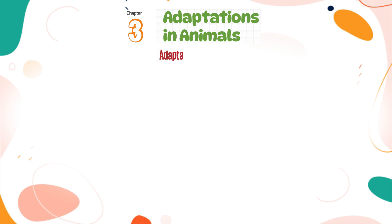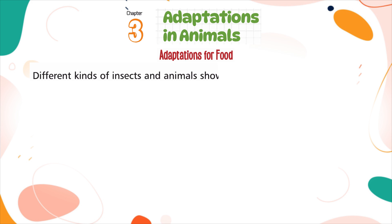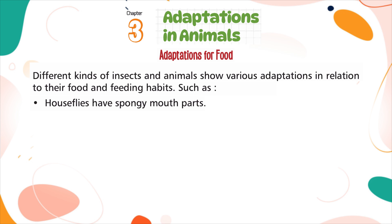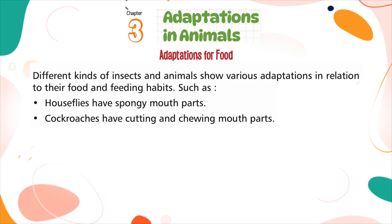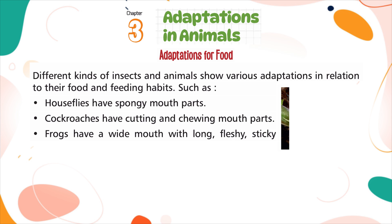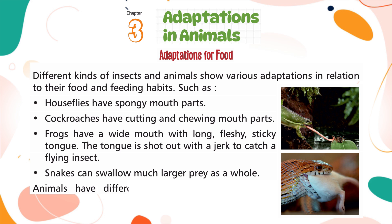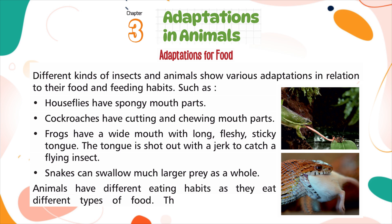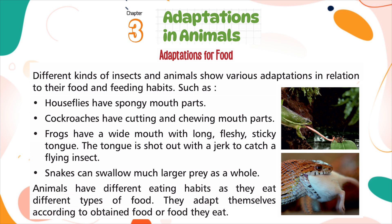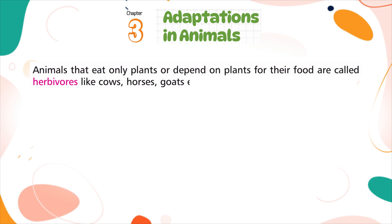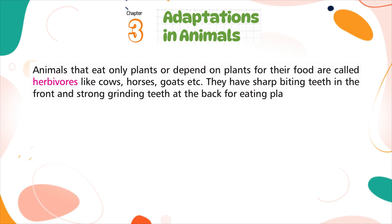Adaptations for Food. Different kinds of insects and animals show various adaptations related to their food and feeding habits. House flies have spongy mouth parts. Cockroaches have cutting and chewing mouth parts. Frogs have a wide mouth with long, fleshy, sticky tongues — the tongue is shot out with a jerk to catch a flying insect. Snakes can swallow much larger prey whole. Animals that eat only plants are called herbivores, like cows, horses, and goats. They have sharp biting teeth in the front and strong grinding teeth at the back for eating plants.